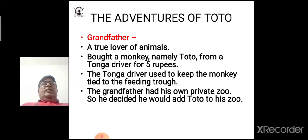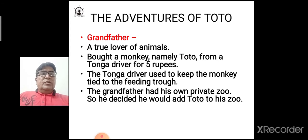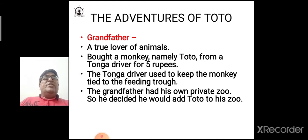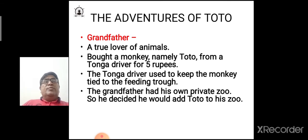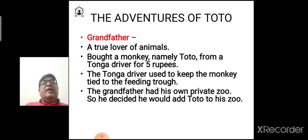The main character of the story is grandfather, who was a true lover of animals. He even bought a monkey named Toto from a tonga driver for five rupees. The tonga driver used to keep the monkey tied at the feeding trough. Grandfather loved animals, so he decided to add Toto to his own private zoo.